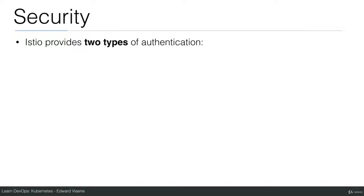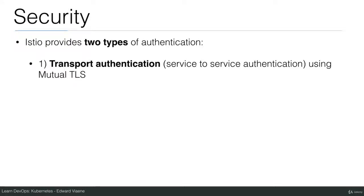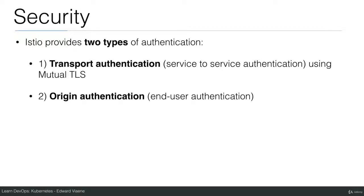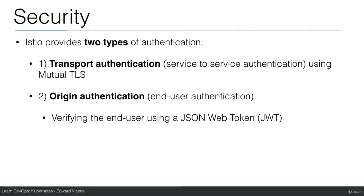Istio provides two types of authentication. Transport authentication: service-to-service authentication using mutual TLS. You also have origin authentication, which is end-to-end authentication — verifying the end user using a JSON web token. I'll be talking about the first one: transport authentication, service-to-service authentication, using mutual TLS for that.